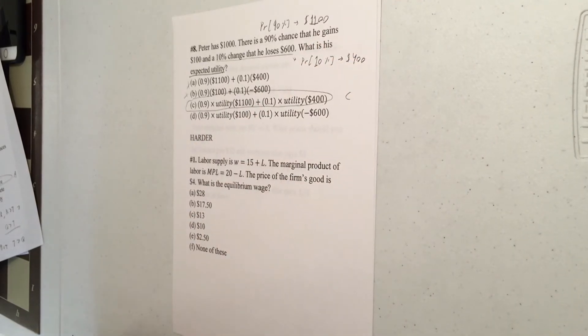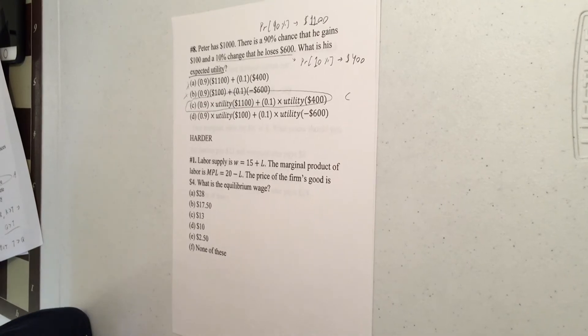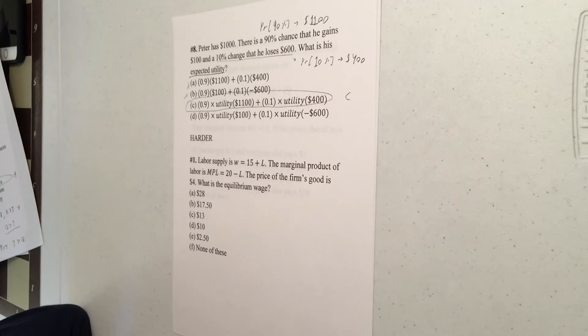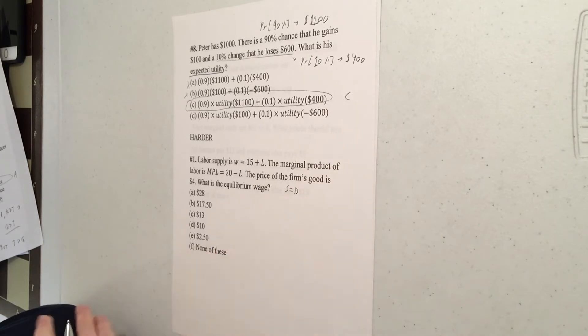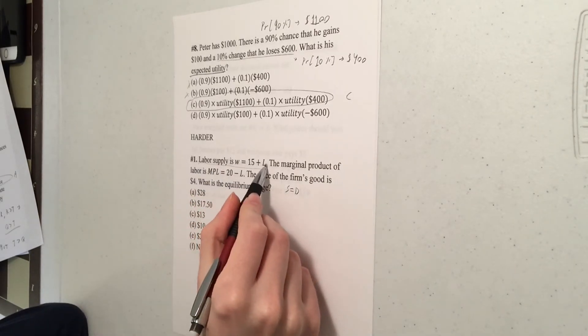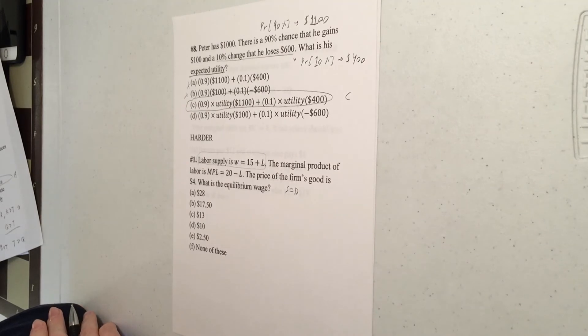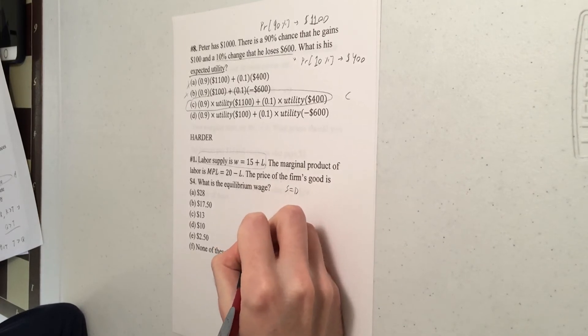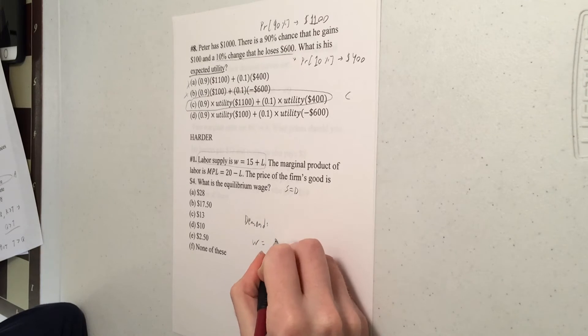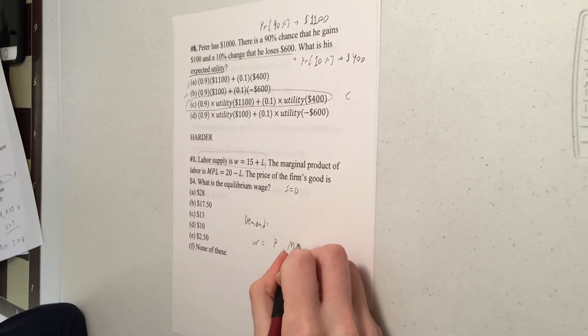So labor supply is 15 plus L. The MPL is 20 minus L. Price of our good is $4. We're trying to find the equilibrium wage. So equilibrium means supply equals demand. We're given supply. Now we're going to find demand. So our demand was given by this condition. We said that the wage was equal to price times the marginal product of labor. And we had some intuition for why that was true.